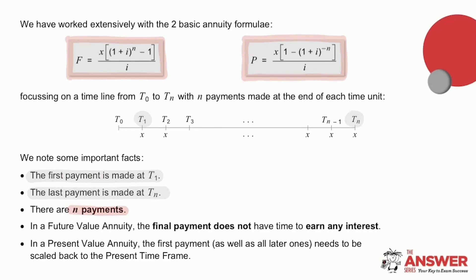If we look specifically at the future value annuity, the final payment is made right at the end of the final time period and so doesn't have time to earn any interest. For the present value annuity, all payments, including the first one, have to be scaled back to time T0, the present time frame.